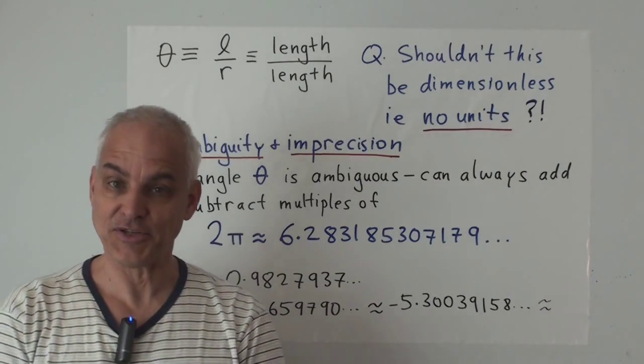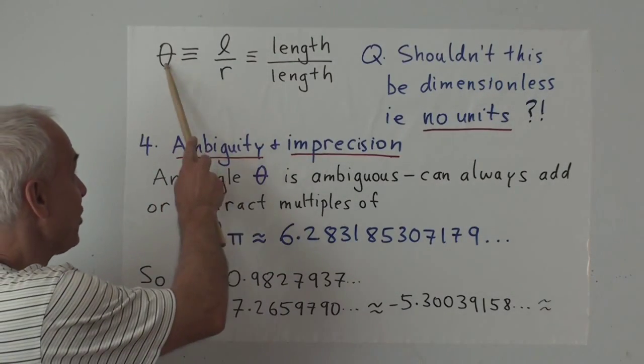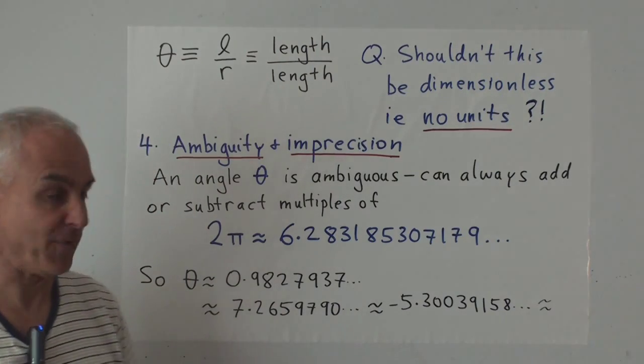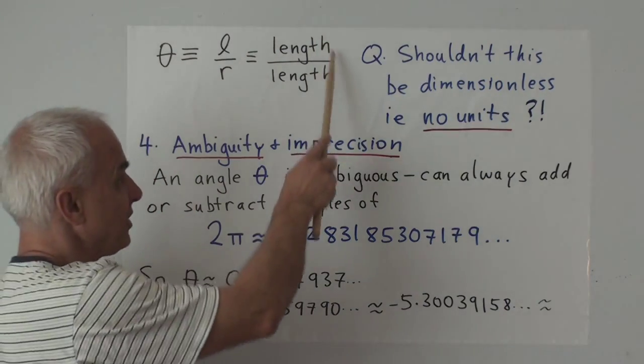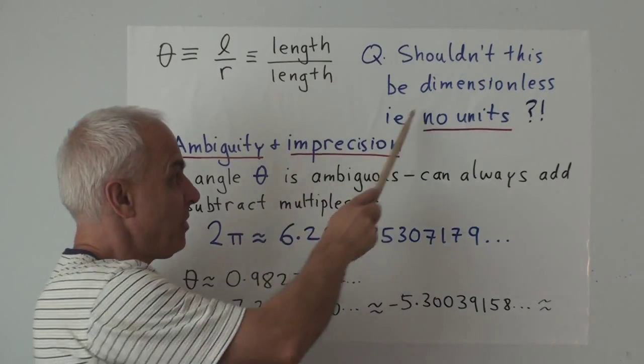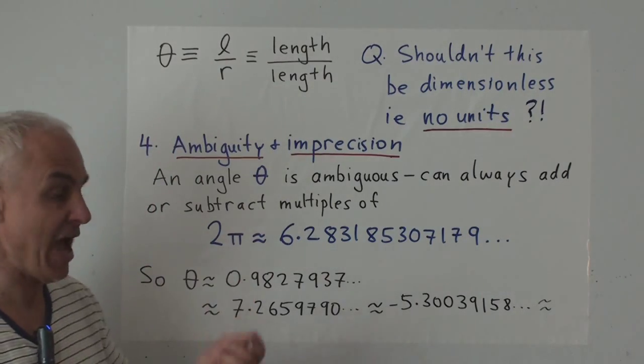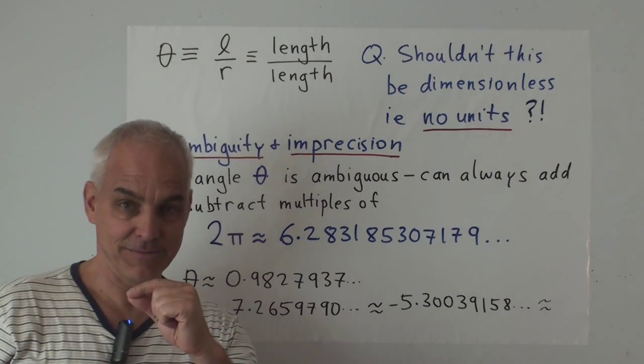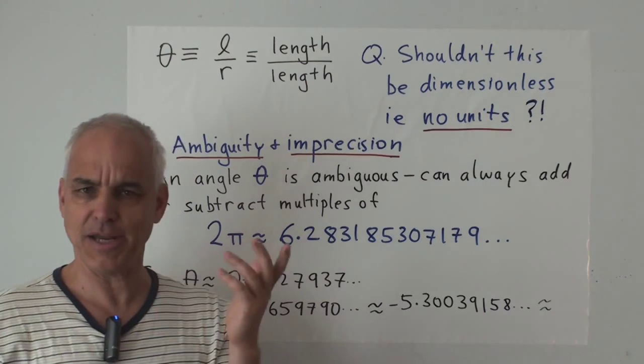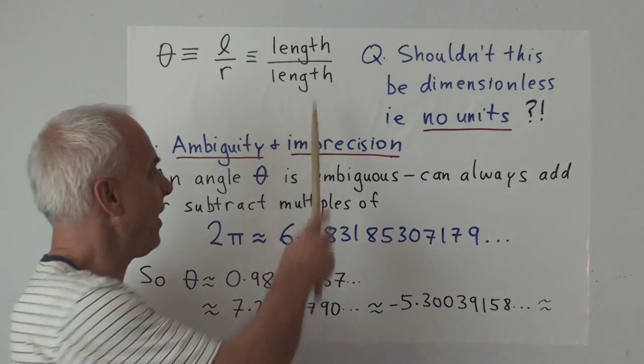An issue that often confuses physics students when they meet the definition of an angle as length of an arc divided by the length of the radius is both of these are quantities of length. So shouldn't the result of the quotient be a dimensionless quantity? Shouldn't it essentially have no units at all? That's a kind of puzzling and interesting question. Why do we need units at all if we're measuring angles?